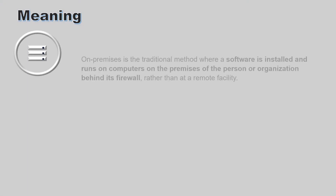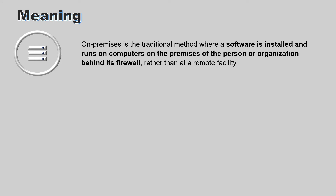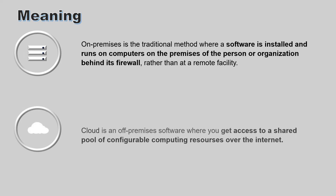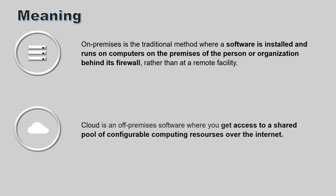On-premise, or on-premises, is a traditional method where software is installed and runs on computers on the premises of the person or organization, behind its firewall, rather than a remote facility. Cloud is an off-premise software where you get access to a shared pool of configurable computing resources, which includes networks, servers, storage, applications, and services that can be rapidly provisioned and released with minimal management effort or service provider interaction.